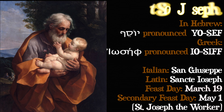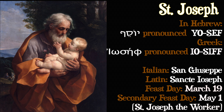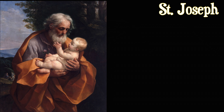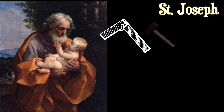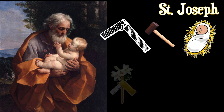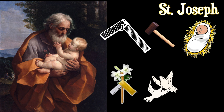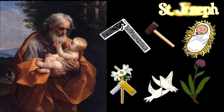St. Joseph is often symbolized by a carpenter's square or other tools, by the infant Jesus, by a staff with lily blossoms on it, by two turtle doves, or a rod of spikenard, a perfumed plant.